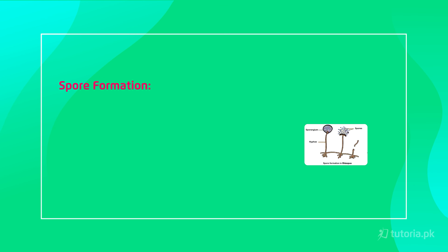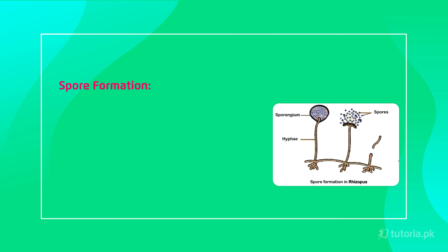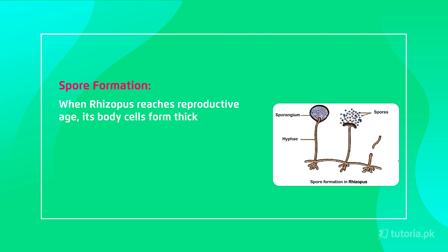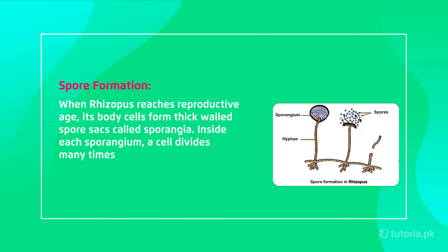The next method is spore formation. I will explain it using the example of Rhizopus. Rhizopus is a fungus — in common language, we call it bread mold, because this fungus grows on bread. When Rhizopus reaches its reproductive stage, it forms a thick-walled spore sac called a sporangium.